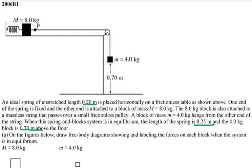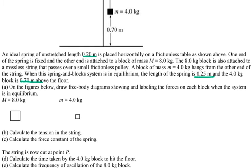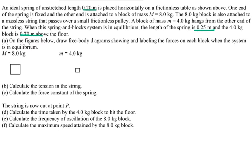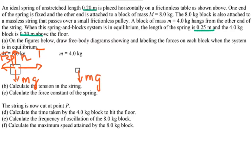The question asks you to draw free body diagrams labeling the forces on each block when the system is in equilibrium. When the system is in equilibrium, the forces acting on the top mass are: tension, the force of gravity, the normal force, and the spring force. On the hanging mass, you have the force of gravity acting down and the tension force acting up.